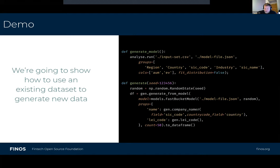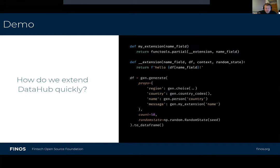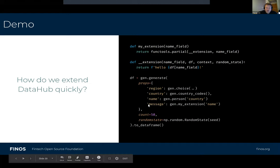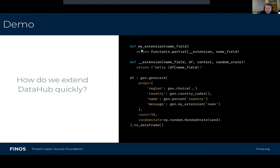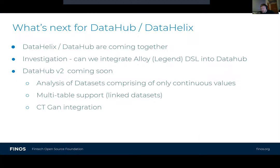That's briefly what DataHub does — sorry I couldn't do a live demo, things went horribly wrong. DataHub is also incredibly easy to extend. If there's not a function you want, with a couple of lines of Python you can extend it — for example, adding a little message that says 'hello, whatever your name is'. It just takes a couple of lines of code. So if you want something extra, it's really easy.